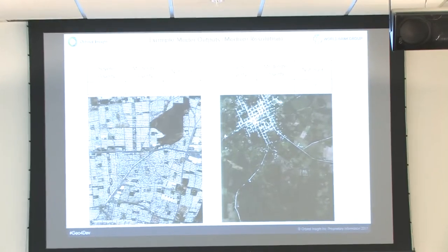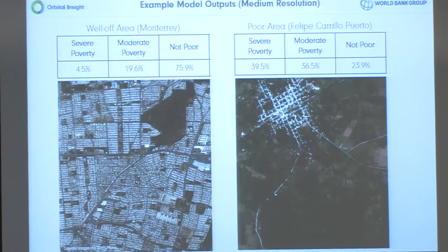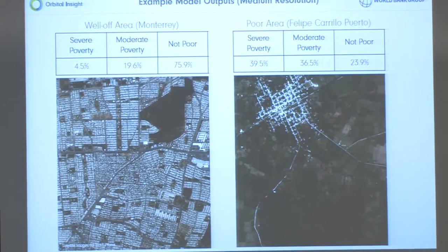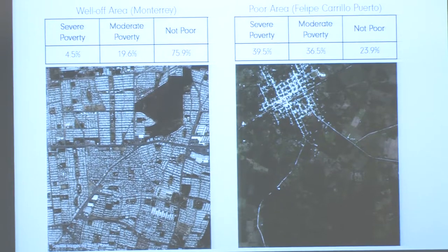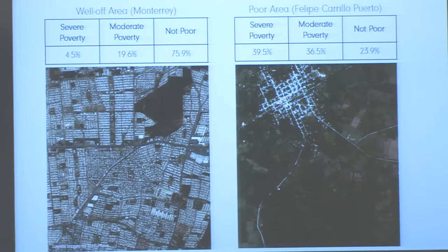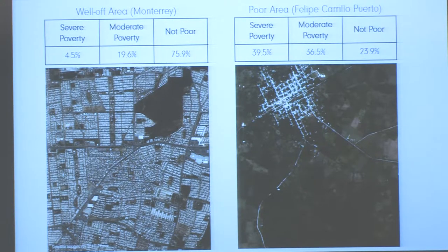Those were high-resolution images. These are examples of the medium-resolution images, where the pixel distance is three meters. These are from Planet, while the previous images were from DigitalGlobe. Similar to the last slide, the image on the left is a relatively well-off area while the image on the right is relatively poor. The well-off image has a clear grid structure, while the poorer image is a less urbanized area.